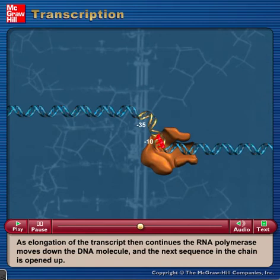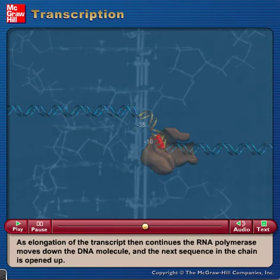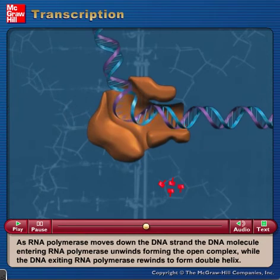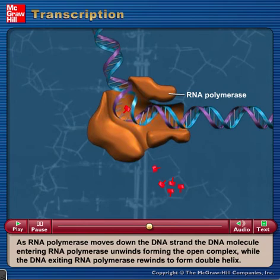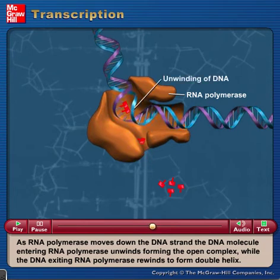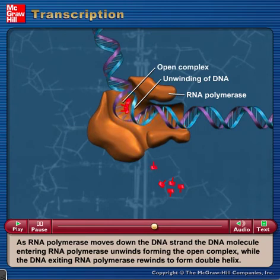As elongation of the transcript continues, the RNA polymerase moves down the DNA molecule and the next sequence in the chain is opened up. As RNA polymerase moves down the DNA strand, the DNA molecule entering RNA polymerase unwinds, forming the open complex.